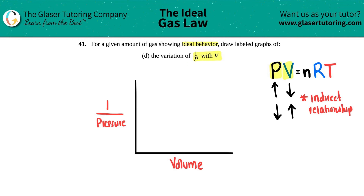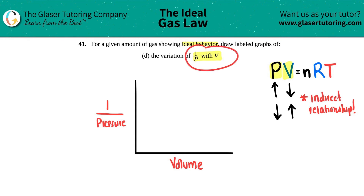The first thing is: are we going to get a hyperbola, or are we going to get a straight linear line? The relationship has to match what they're graphing for it to be linear. Since they said 1 over P, that's showing an inverse relationship — volume is on top, pressure on the bottom — which is an inverse relationship.